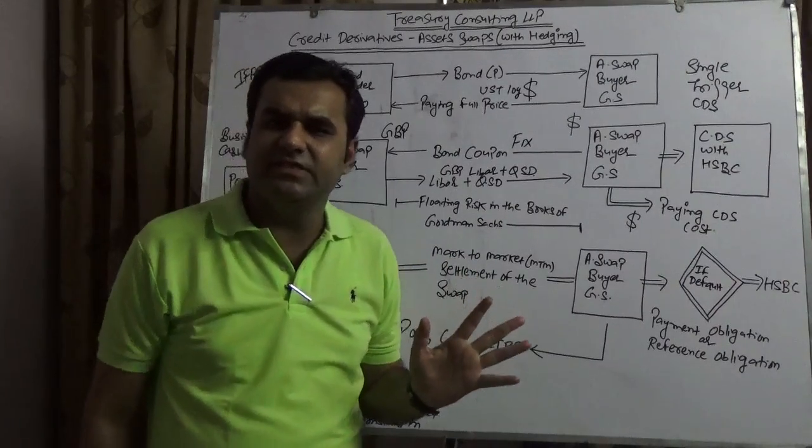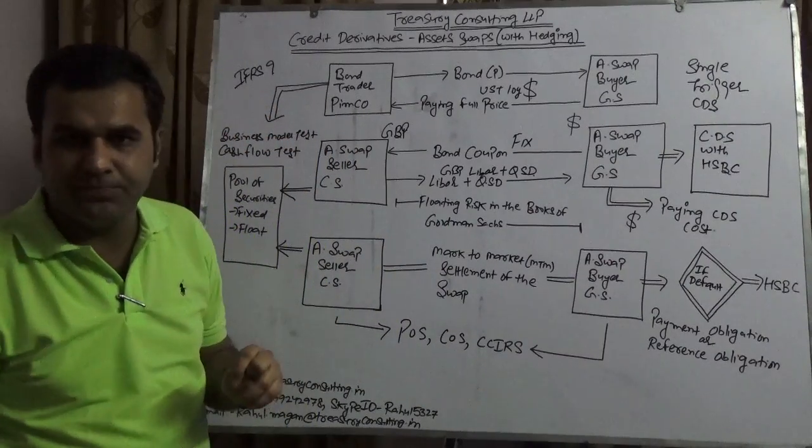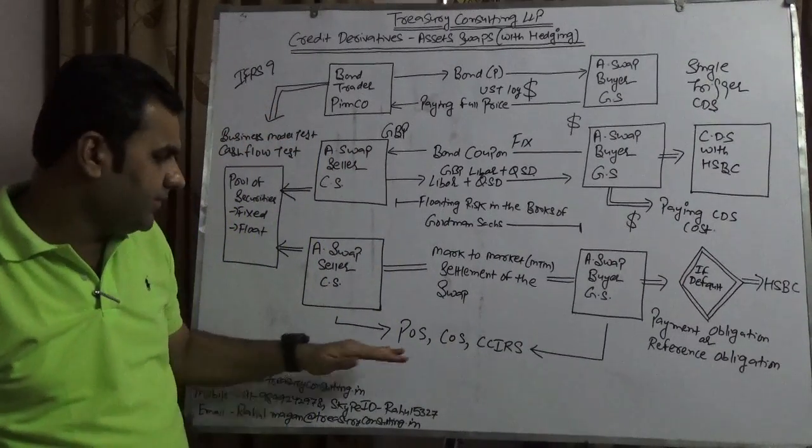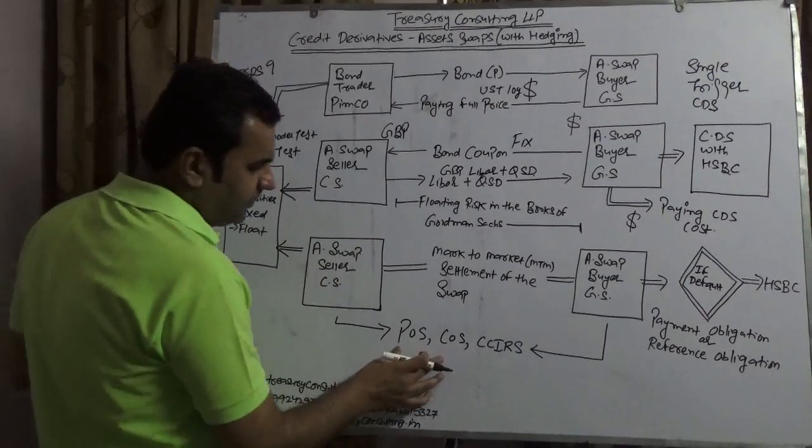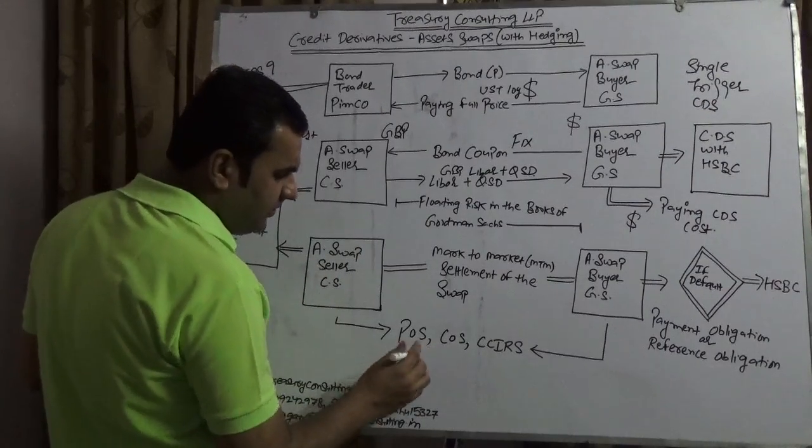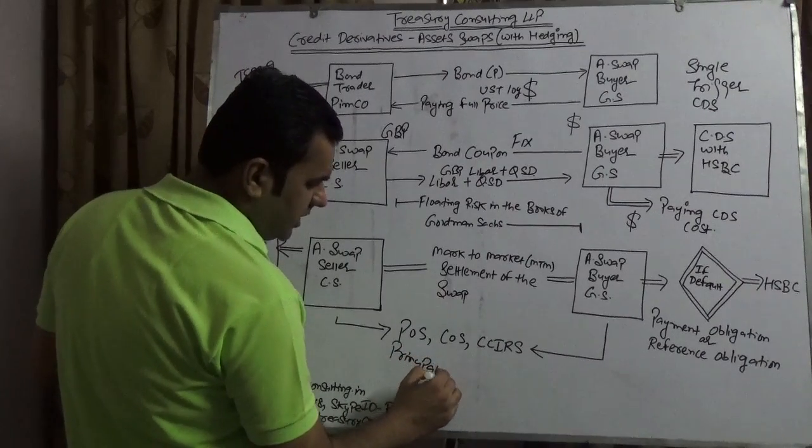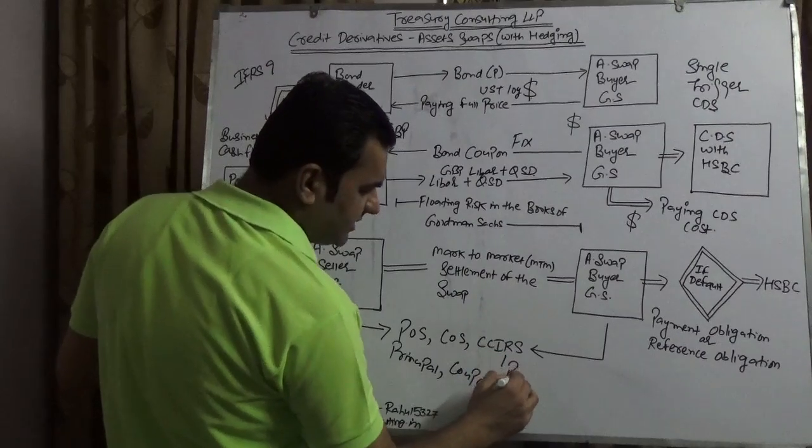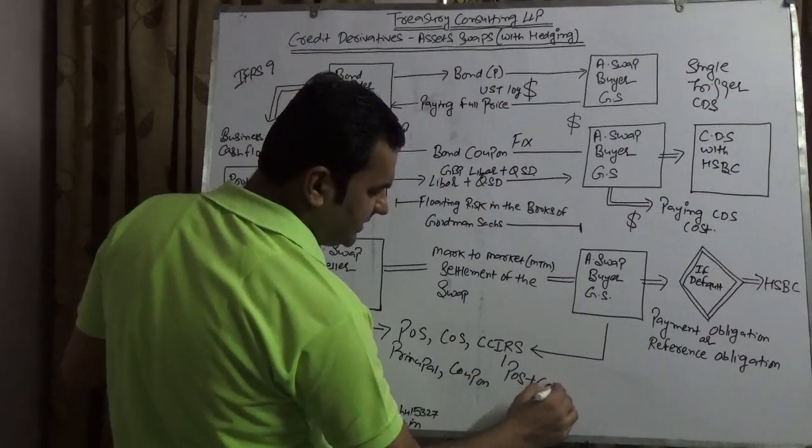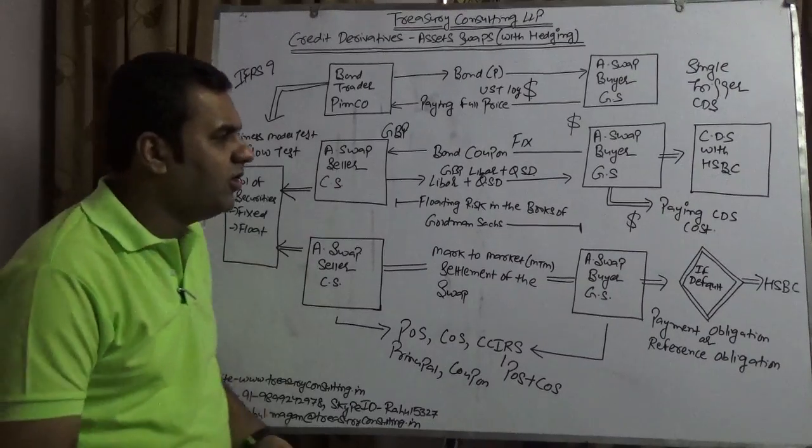In cross-currency asset swaps, Goldman Sachs needs to consider three forms of hedging: POS (principal only swap) for hedging principal, CUS (coupon only swap) for hedging coupon, and cross-currency interest rate swap, which is POS plus CUS.